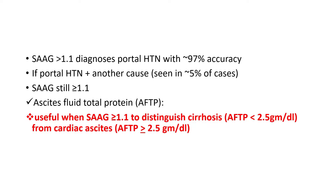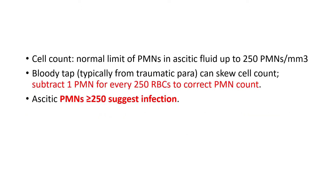Patients may have portal hypertension with additional other causes. In this case, one can measure total protein of the ascitic fluid: if it is above 2.5 g/dL, it may be due to non-cirrhotic causes including heart failure; if it is less than 2.5 g/dL, it is most likely due to cirrhosis.